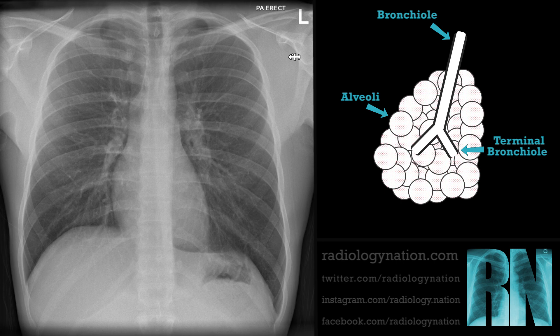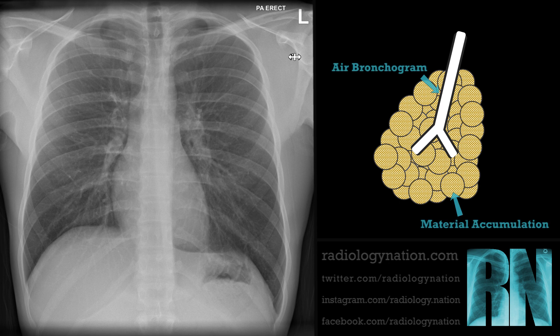However, it is often incorrectly interpreted as a synonym for pneumonia. Consolidation is confirmed by the presence of air bronchograms. An air bronchogram is an aerated bronchus or bronchiole that becomes visible as it is surrounded by opacified alveoli. On this image, dense consolidation has outlined a significant proportion of the branching bronchial tree.